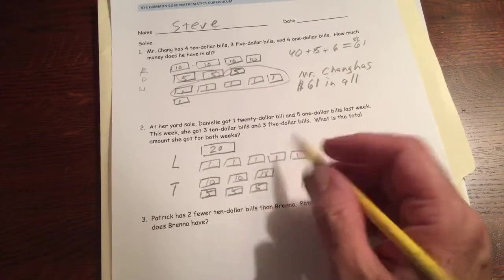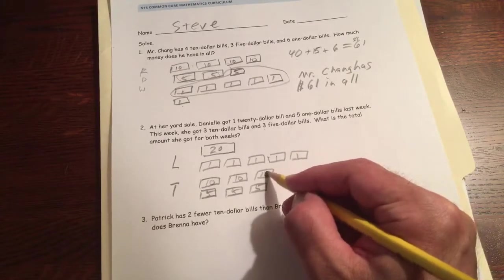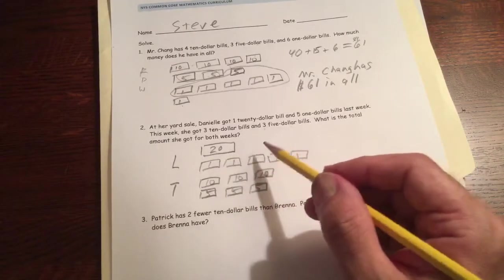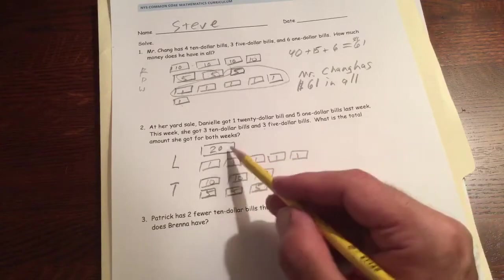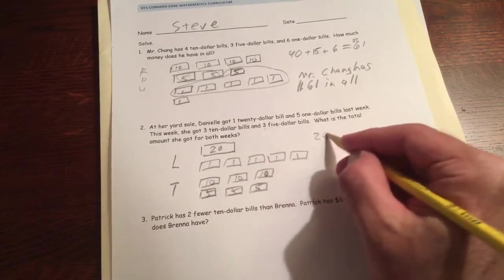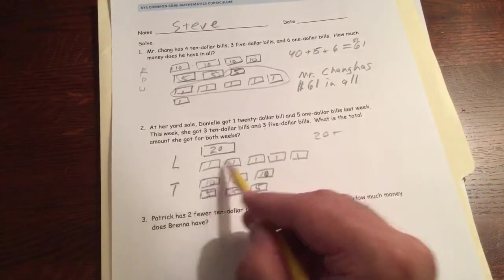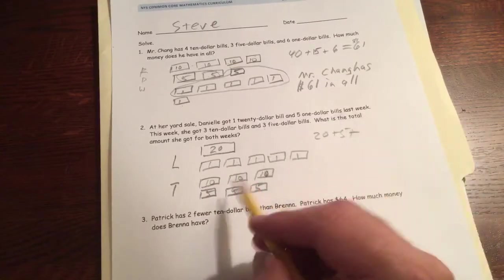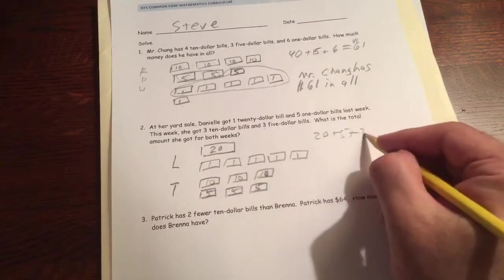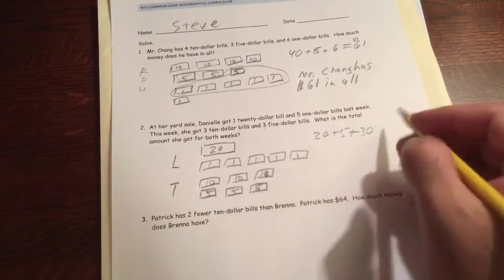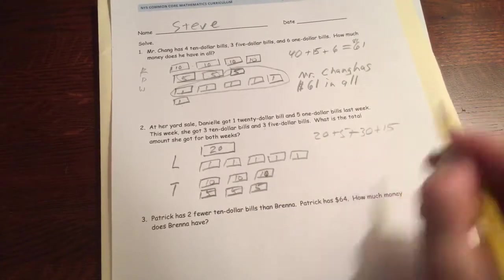That's a ten. We could write a number sentence and add it up. So we have a 20 plus these, one, two, three, four, five, five, plus, that's 30. And three fives is 15. We could add it up like that.